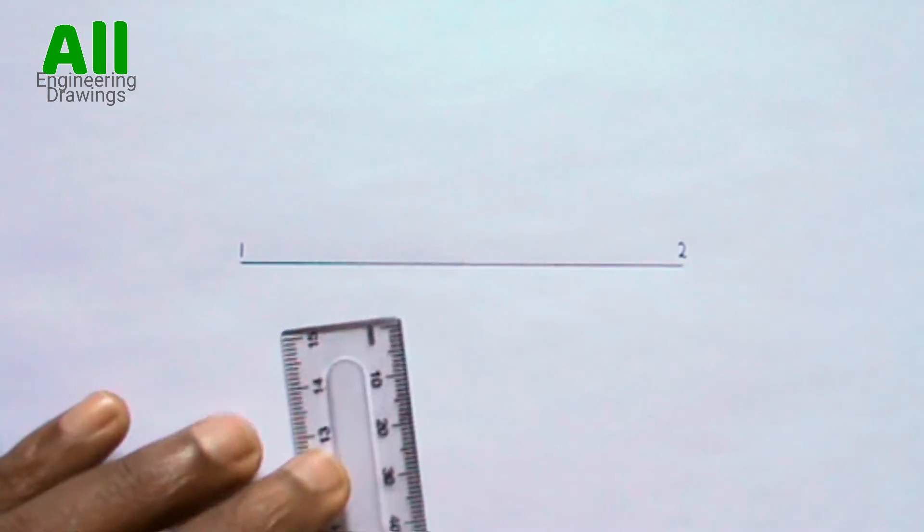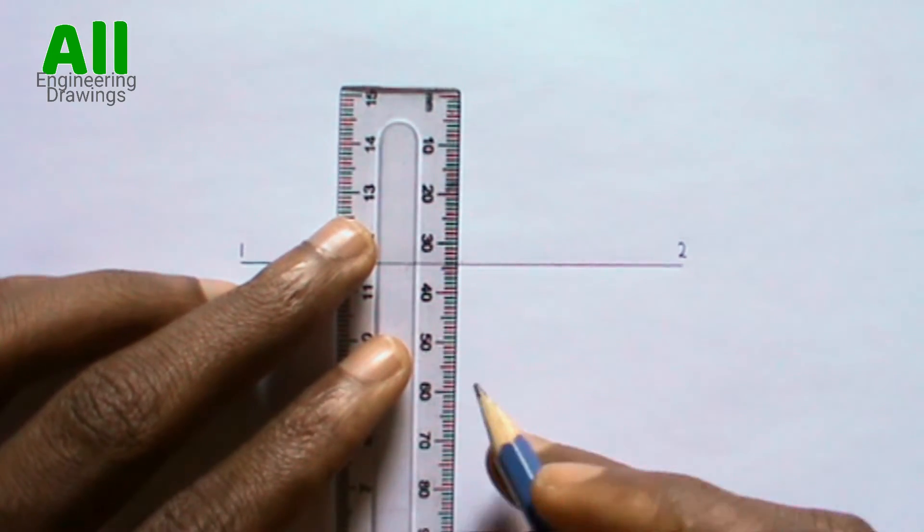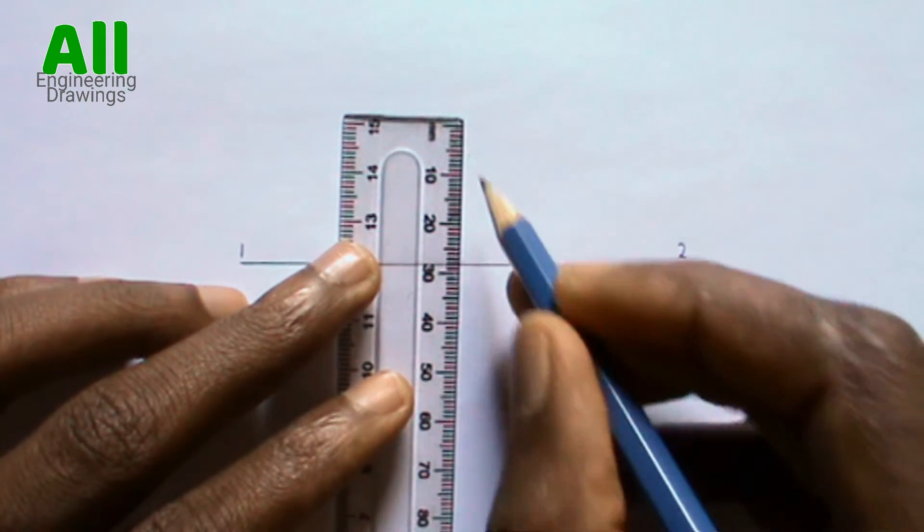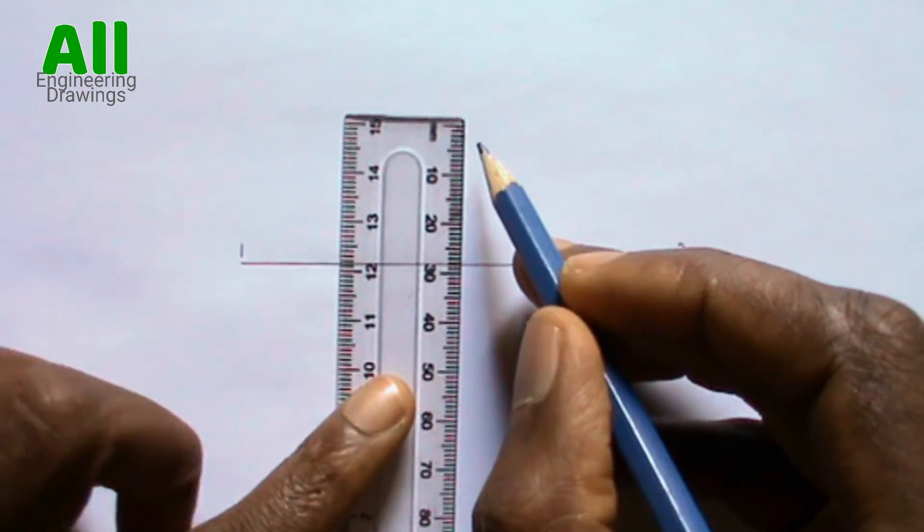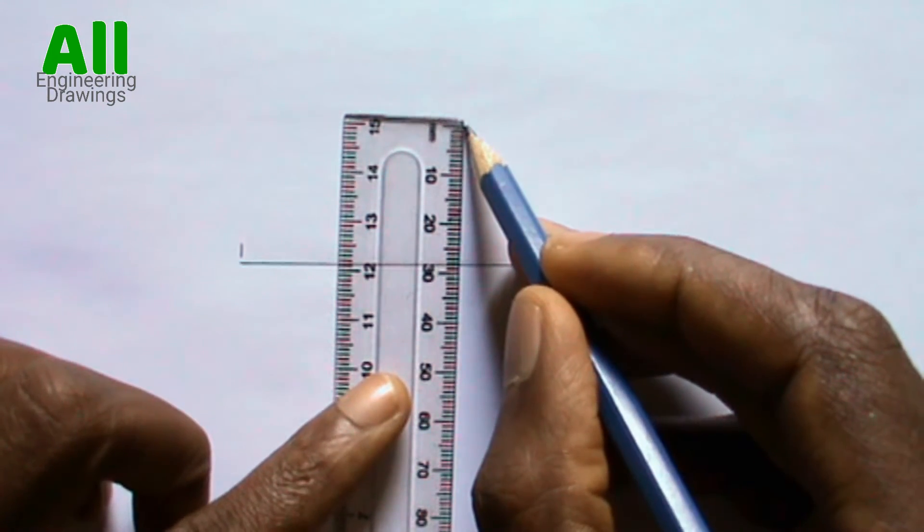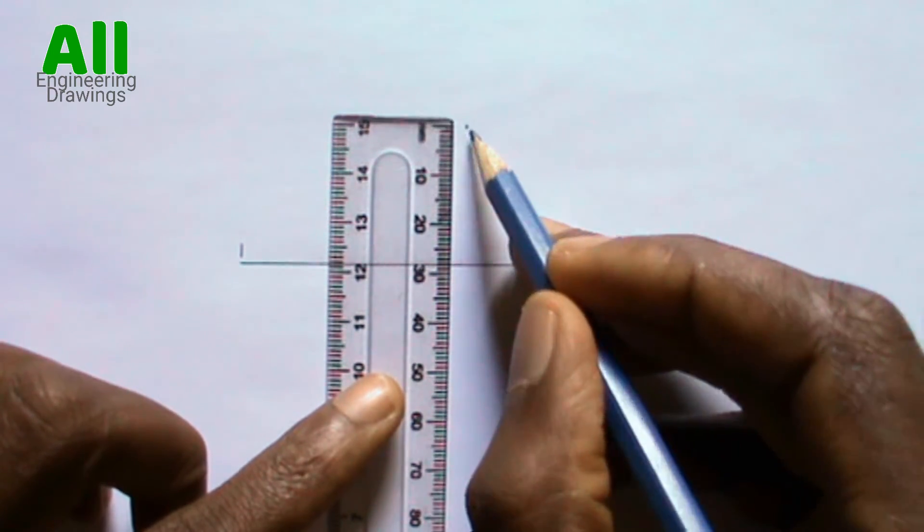Now mark the given point. You can use your ruler if the distance of the point from your line is specified. Label the point you marked.